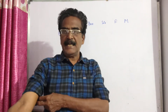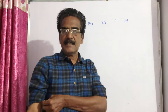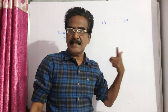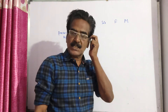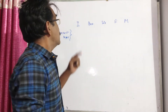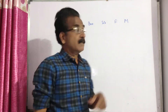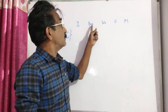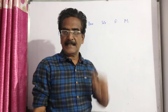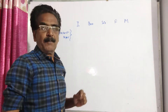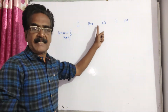Hi friends, good morning. Please look at the next problem in the ages chapter. This is an interesting problem — the problem is given in the description box. In this problem, there are five members: I, my brother, sister, father, and mother. I am working out the present ages of all five members.